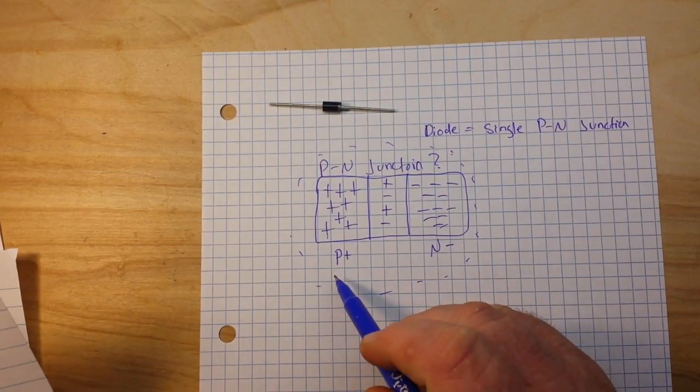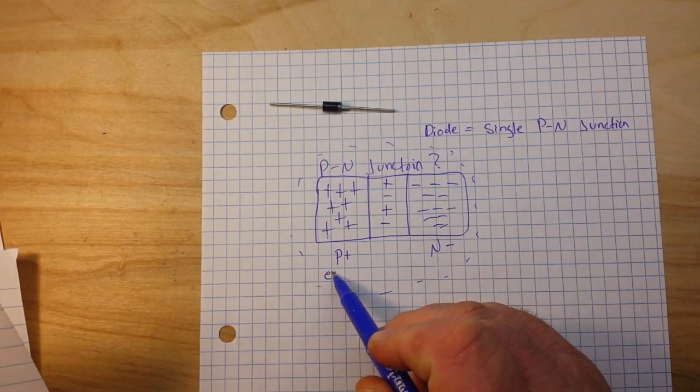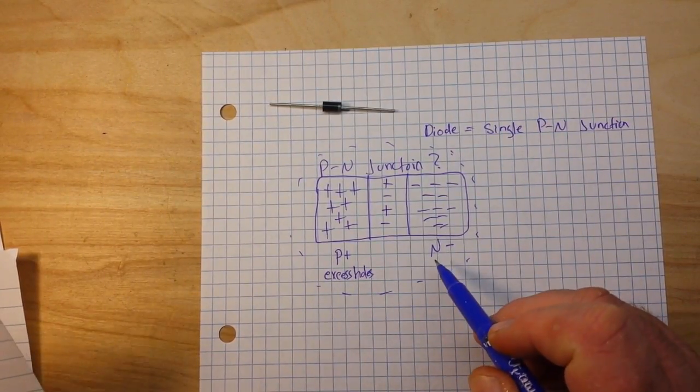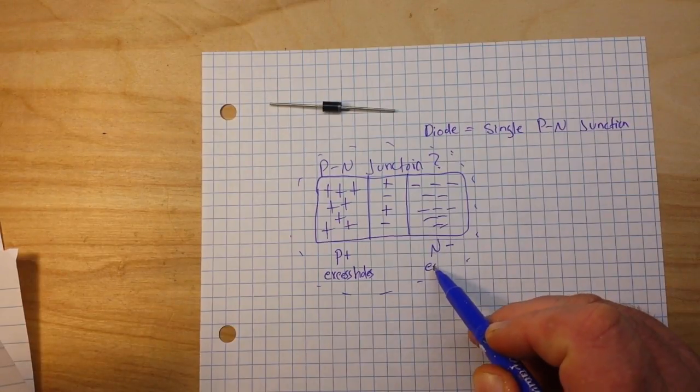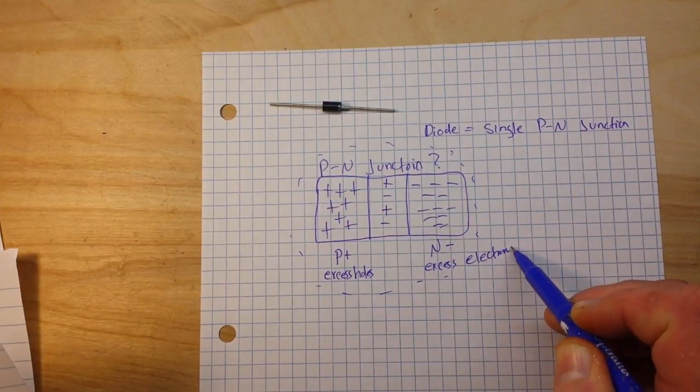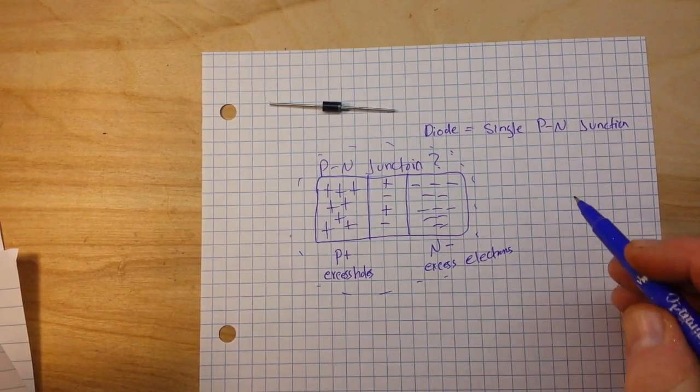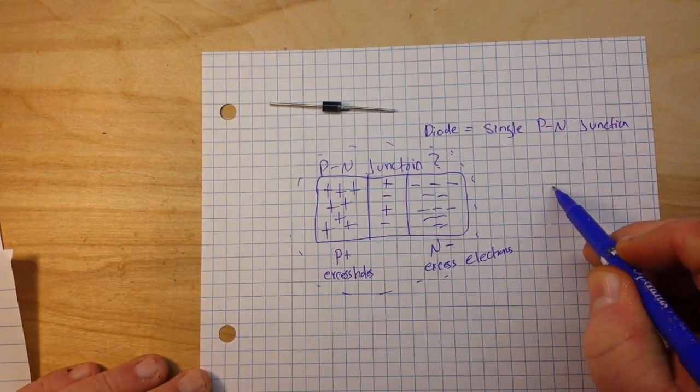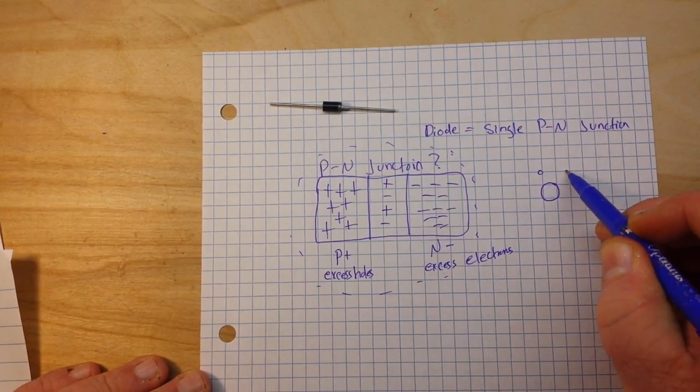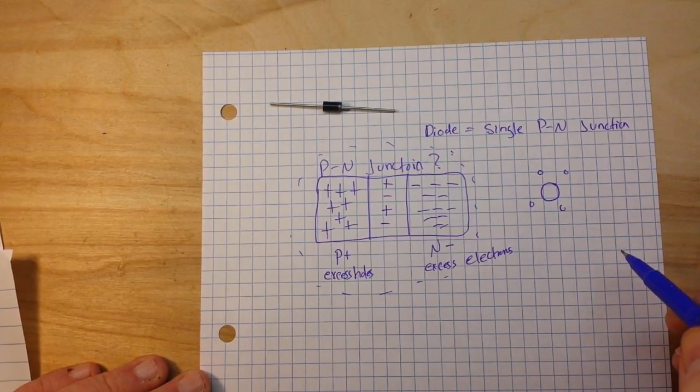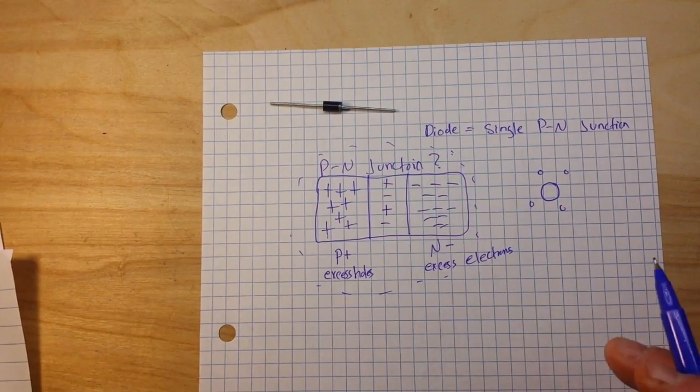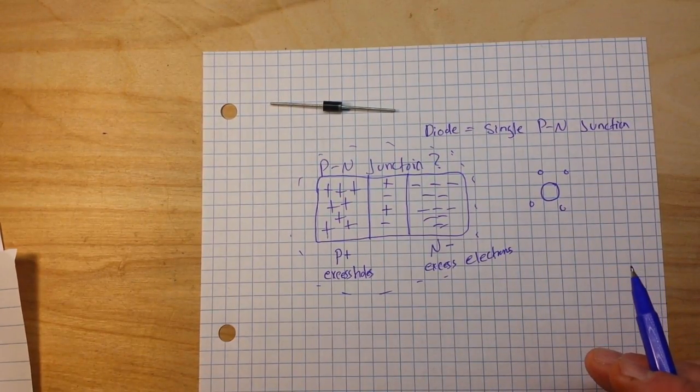On the P side, we have excess holes. And on the N side, we have excess electrons. So a silicon atom has four electrons. And by doping them, there are many different things that we can use to dope them.